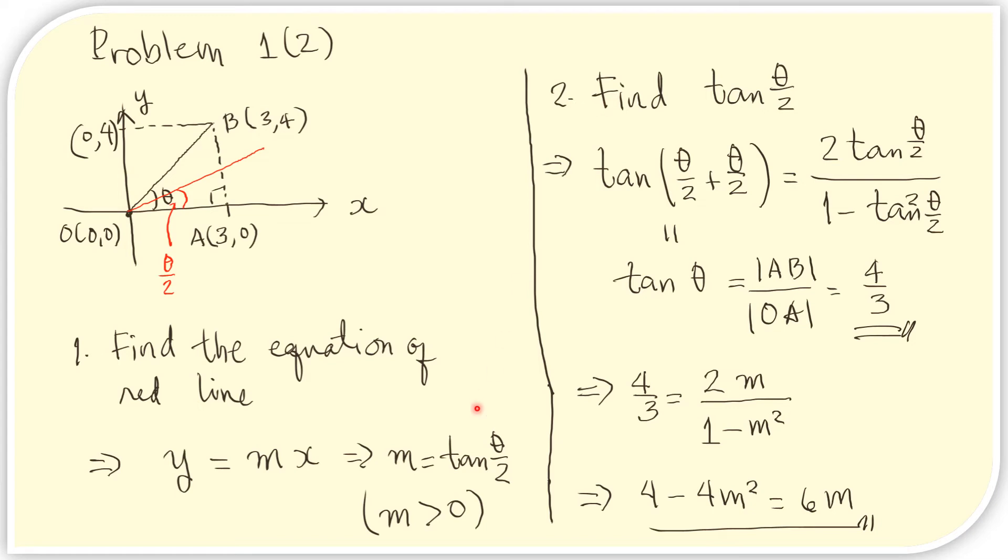Now, we just need to find the tangent of theta over 2. What we know is the tangent of theta, because the tangent of theta is just this length over this length. And so we can compute that from the given. That is simply AB over OA. And AB here is 4, so we have 4. And OA is 3. So we know that the tangent of theta equals 4 thirds.